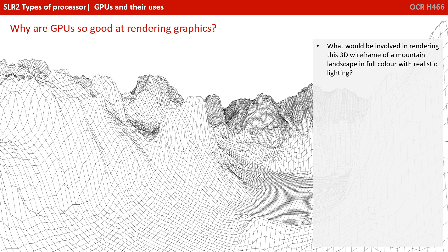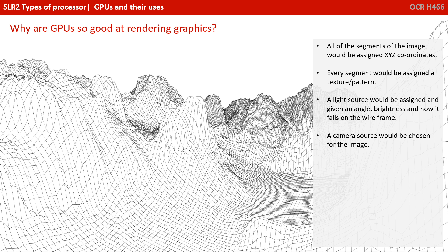To put this into context, consider rendering a 3D wireframe of a mountain landscape in full colour with realistic lighting effects. The whole process is quite complex, but to summarise: all segments of the image would be assigned X, Y and Z coordinates within a 3D virtual space. Every segment would be assigned a texture or pattern. A light source would be assigned an angle, brightness, and how it falls onto the wireframe. A camera source would also need to be chosen.